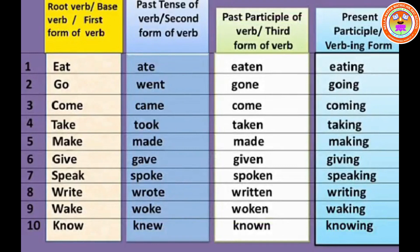Observe the following table. The simple present tense is easy to form. Verbs have forms: present form, past form, past participle, and present participle — otherwise called V1, V2, V3, and verb plus -ing. The verb in the simple present tense is the same as the base form of the verb — that is the first column. That is root verb, base verb, first form of a verb, or present form.